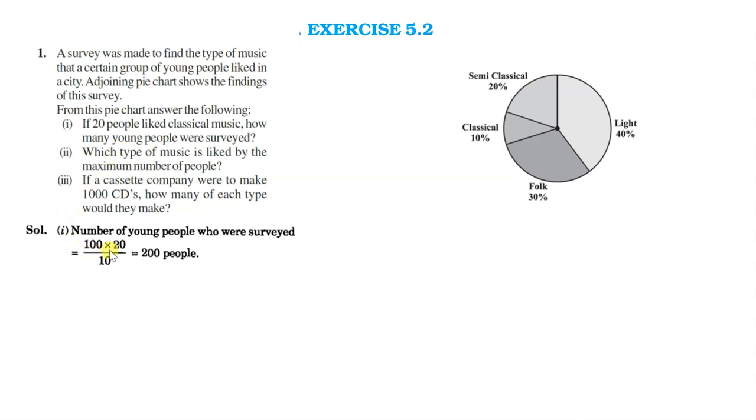We can find it as 20 multiplied by 100 divided by 10, that is 200 people.